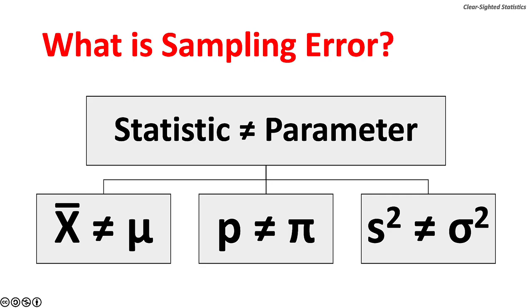What is sampling error? Sampling error occurs when the statistic does not equal the population parameter, when x-bar doesn't equal mu, when p does not equal pi, when s-squared doesn't equal sigma-squared.